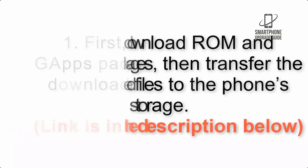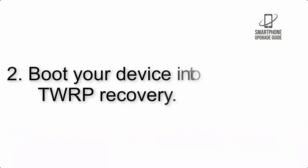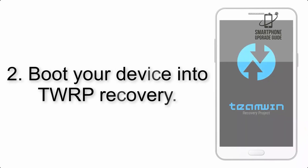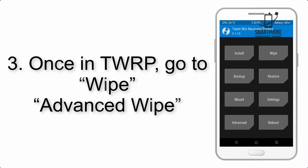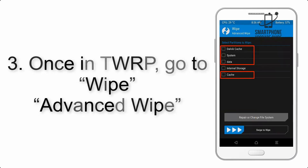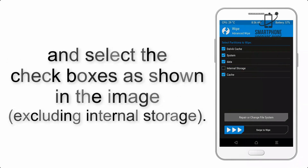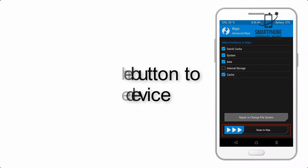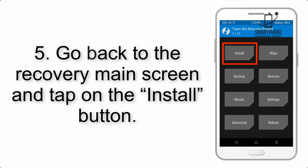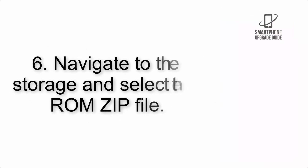The link is in the description below. Step 2: boot your device into TWRP recovery. Once in TWRP, click on Wipe, then Advanced Wipe, and select the checkboxes as shown in the image, excluding internal storage. Step 4: swipe the button to wipe the device.